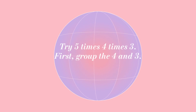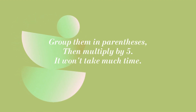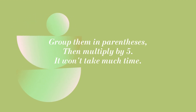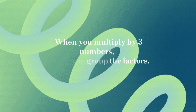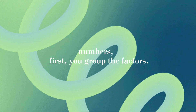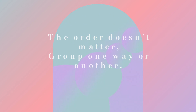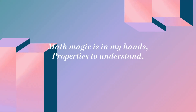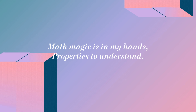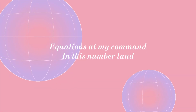Try 5 times 4 times 3. First group the 4 and 3 in parentheses, then multiply by 5 — it won't take much time. When you multiply 3 numbers, first you group the factors; the order doesn't matter. Group one way or another. That magic is in my hands — properties to understand, equations at my command in this number land.